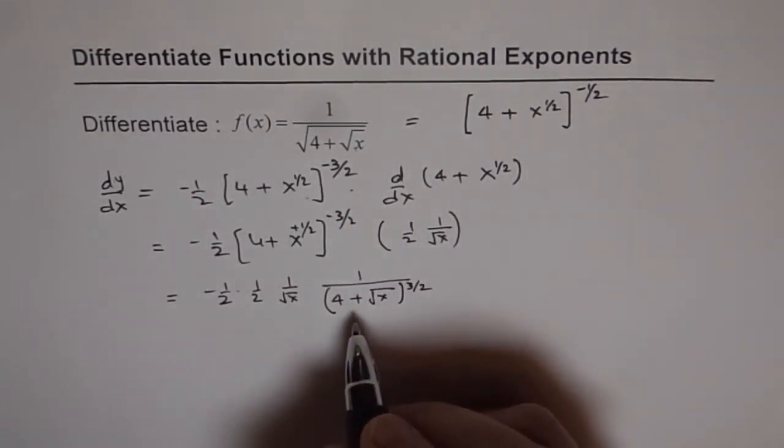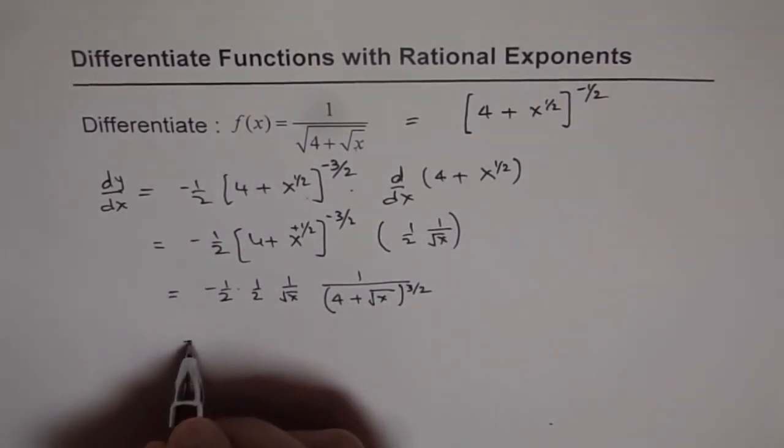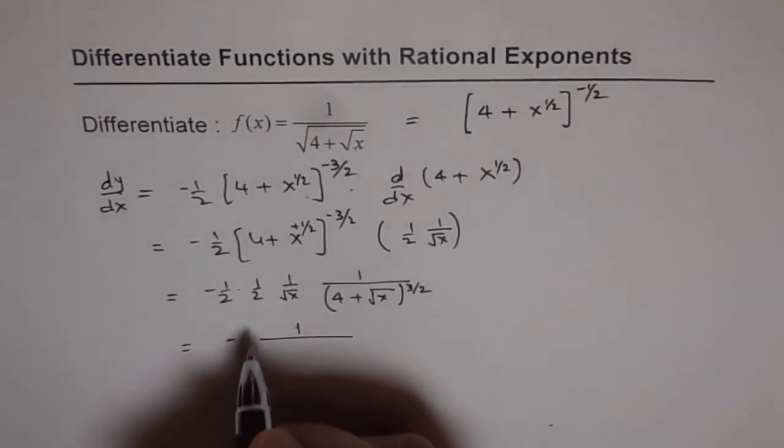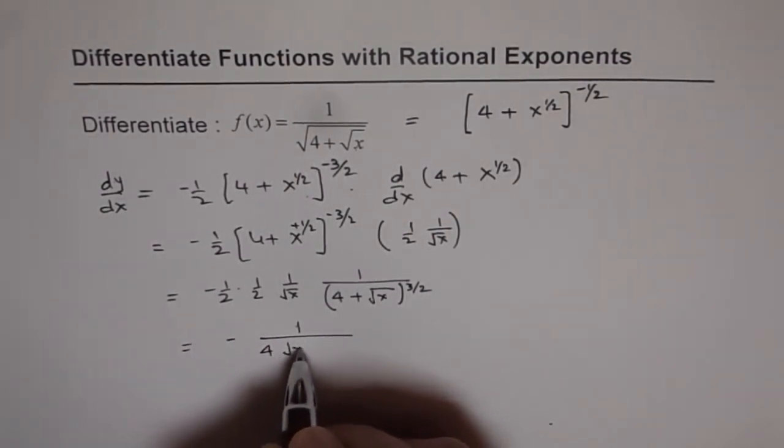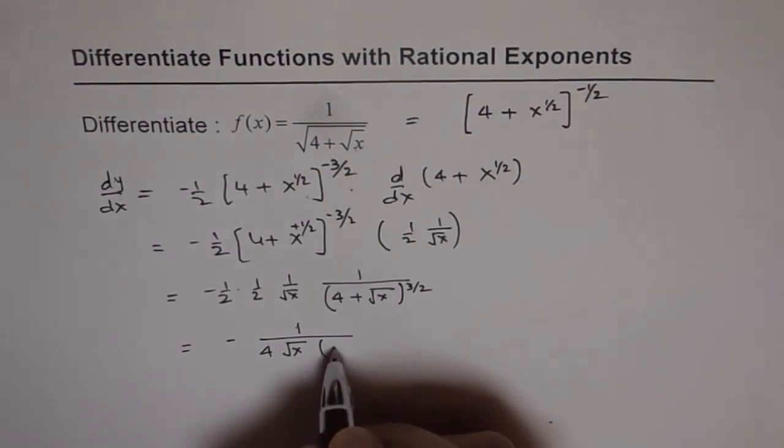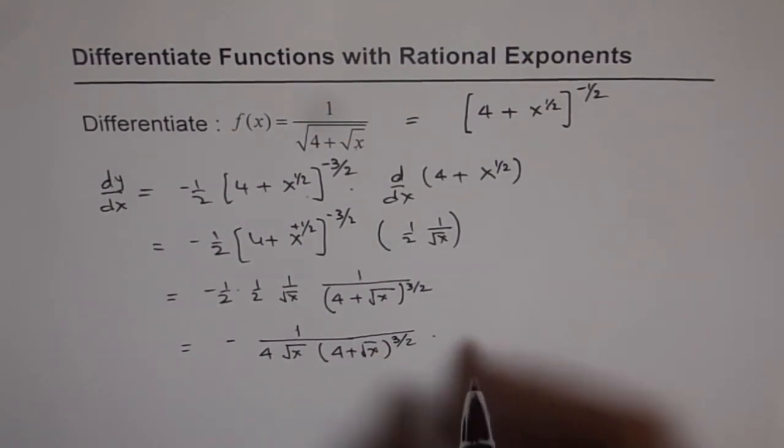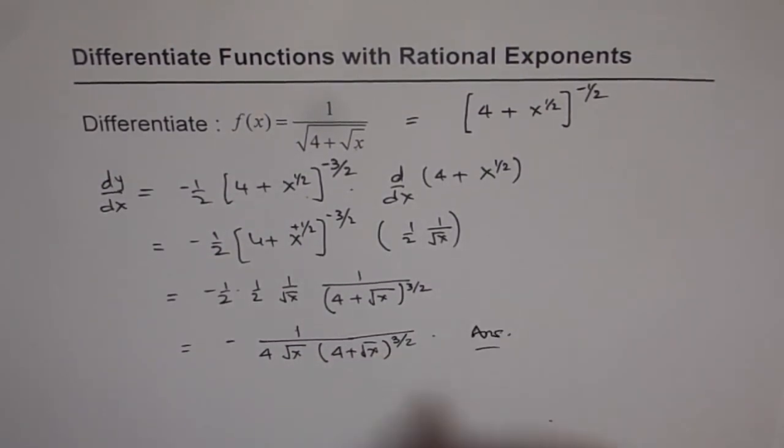So that becomes our solution for this particular question. And we can rewrite this as minus 1 over 2 times 2 is 4. 4 square root of x within bracket. 4 plus square root of x to the power of 3 over 2. So that is the answer. Thank you.